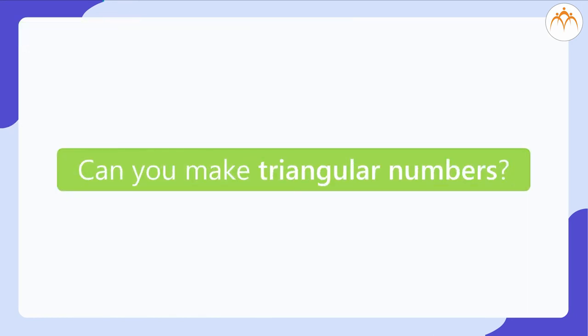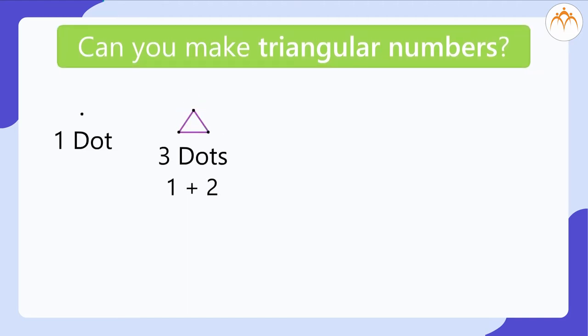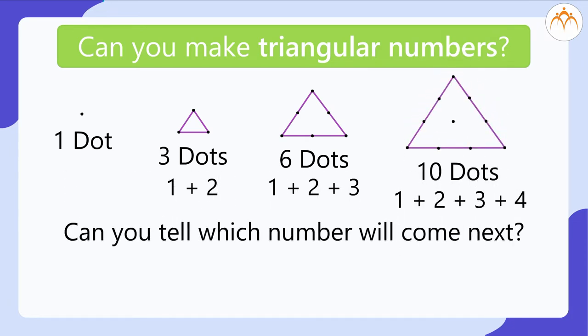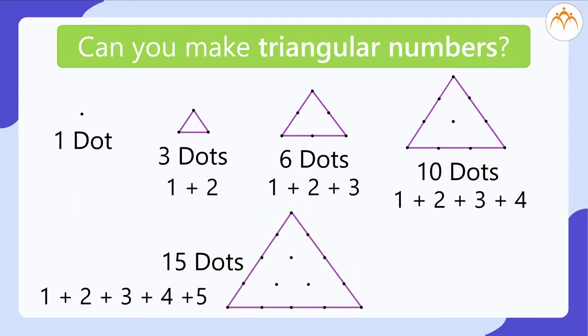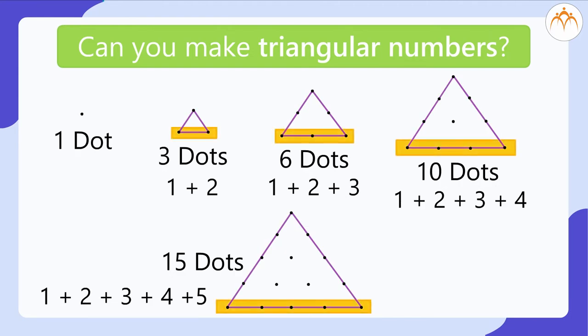Can you make triangular numbers? Let us make a design. 1 dot, 3 dots, 6 dots, 10 dots. Can you tell which number will come next? 15 dots. What do you observe in triangular numbers? There is a sequence generated by a pattern of dots which form a triangle. Each time another row of dots is added and we get 1, 3, 6, 10, 15 and so on.